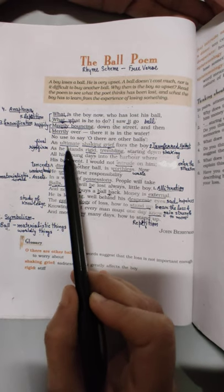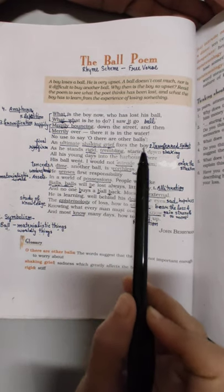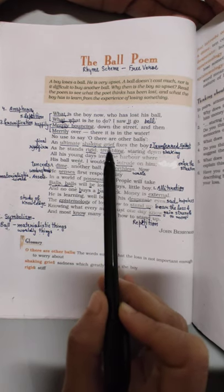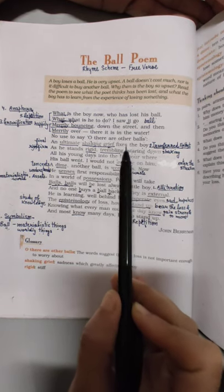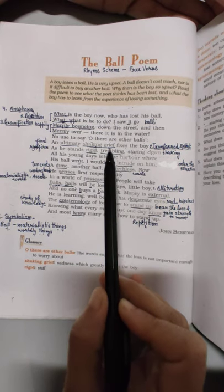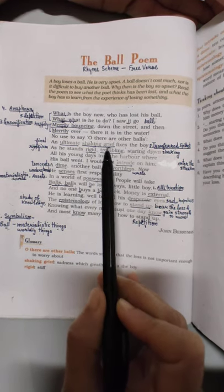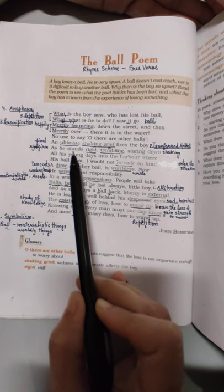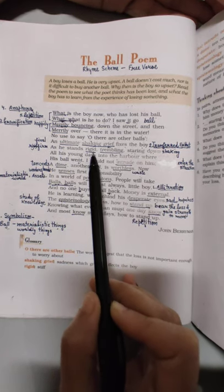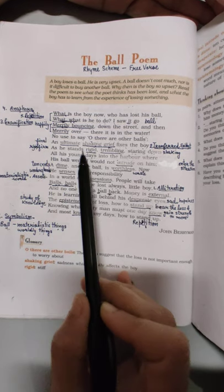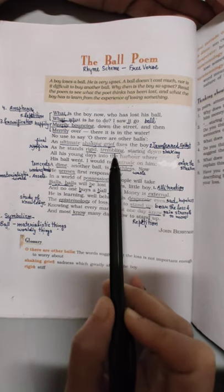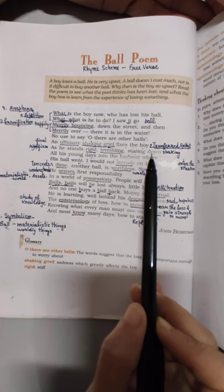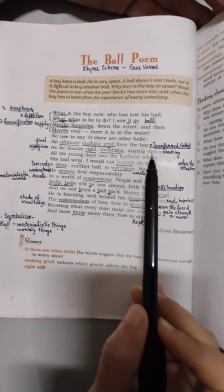An ultimate shaking grief fixes the boy. Ek ultimate, extreme level ka, final shaking means hila ke rakh dene wala grief means sorrow. Uski body shake kar rahi hoti hai, trembling, kaap rahi hoti hai dukh se. As he stands rigid, firmly ek hi jagah par akad ke khada ho jata hai, trembling. Staring down, woh apni aankhon se dekh raha hai, shayad us ball ko jo pani mein padi hui hai.